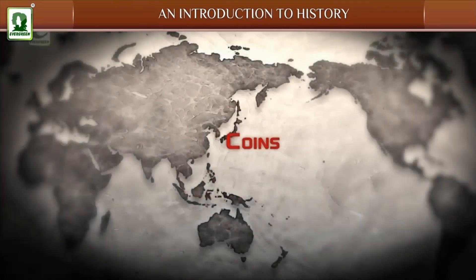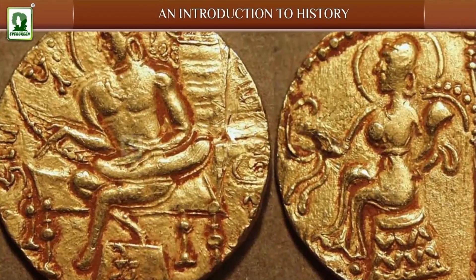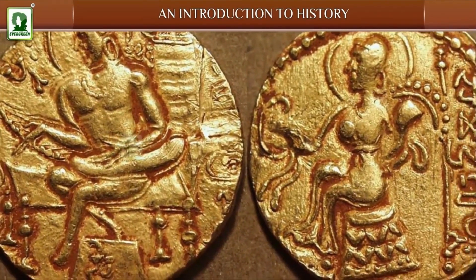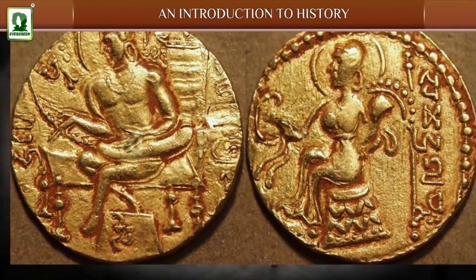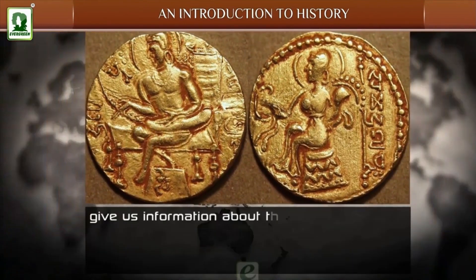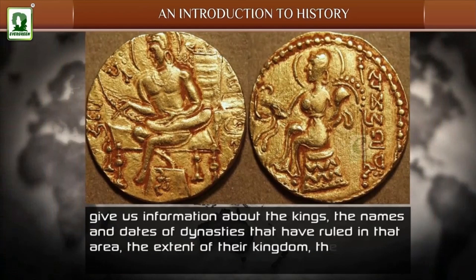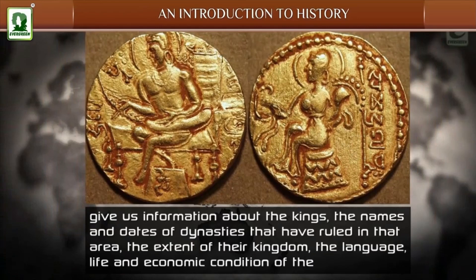Coins: Engravings on coins found during excavations at sites of ancient civilizations give us information about the kings, names and dates of dynasties that ruled in that area, the extent of their kingdom, and the language, life and economic condition of the kingdom.